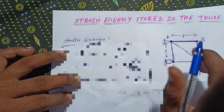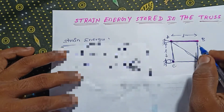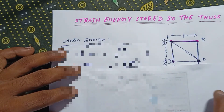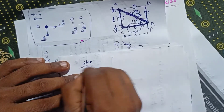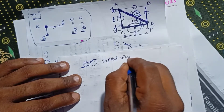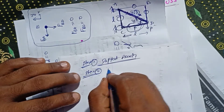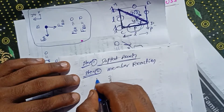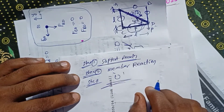We need to find out the loads in every member. To do this, use the method of joints or method of sections. Step 1: Find out the support reactions. Step 2: Calculate the member reactions. Step 3: Calculate the strain energy.